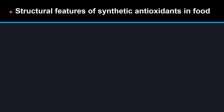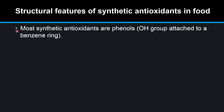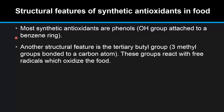Next we look at the structural features of synthetic antioxidants in food. Most synthetic antioxidants are phenols — they have an OH group attached to a benzene ring. Another structural feature is the tertiary butyl group, which is 3 methyl groups bonded to a carbon atom. These groups react with free radicals which oxidize the food.